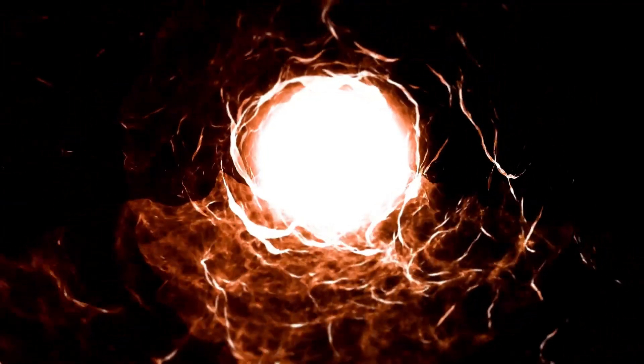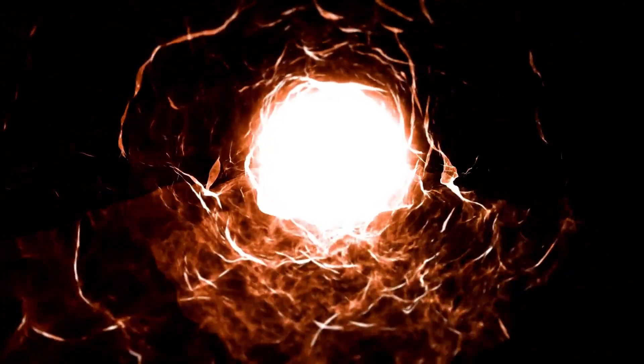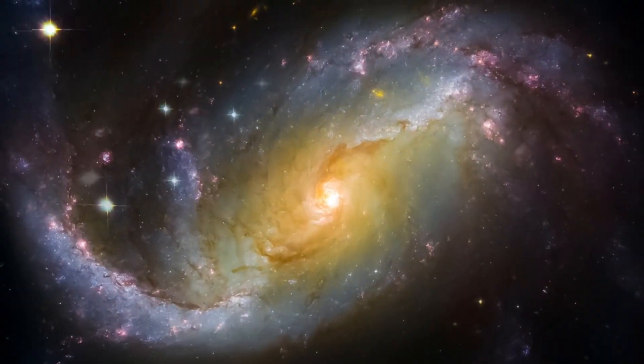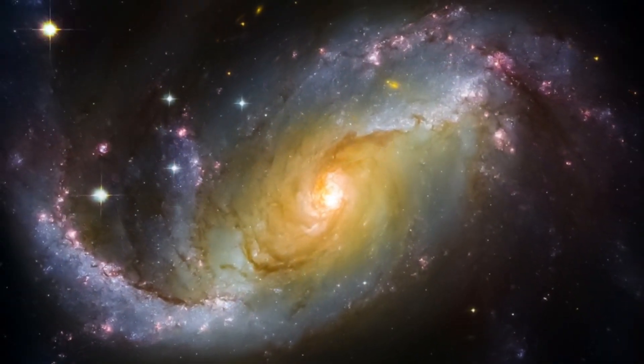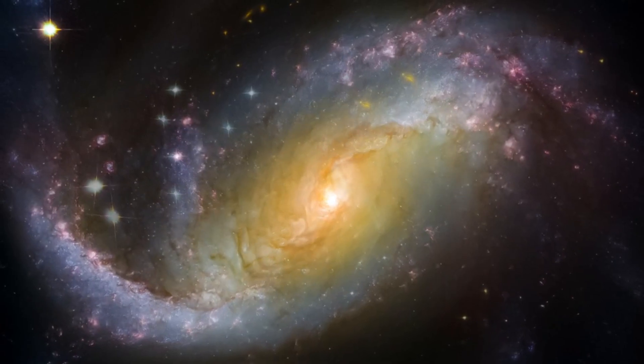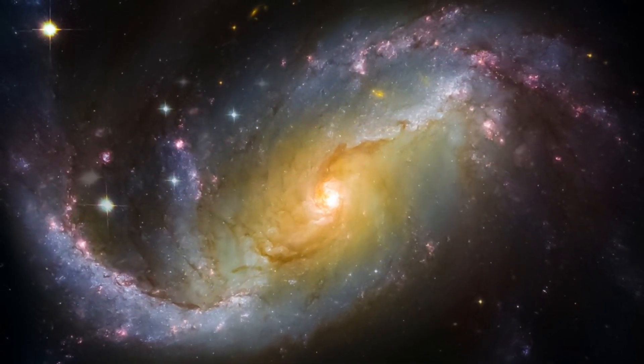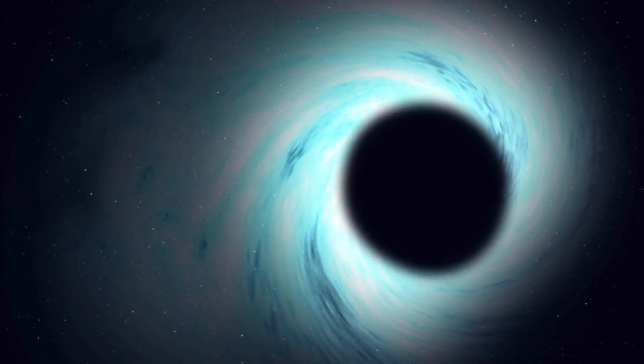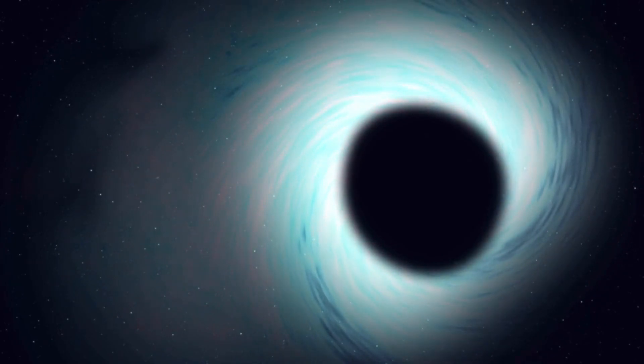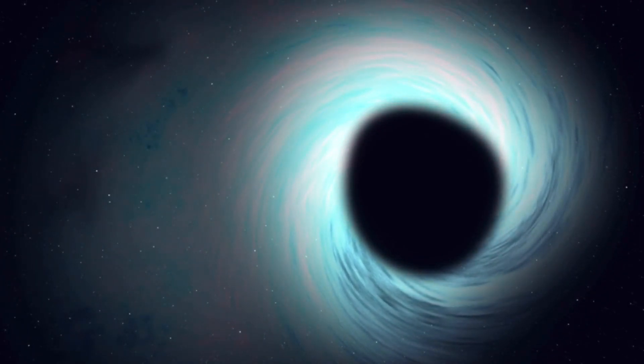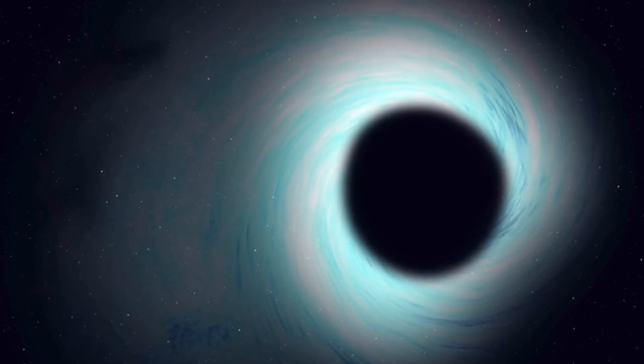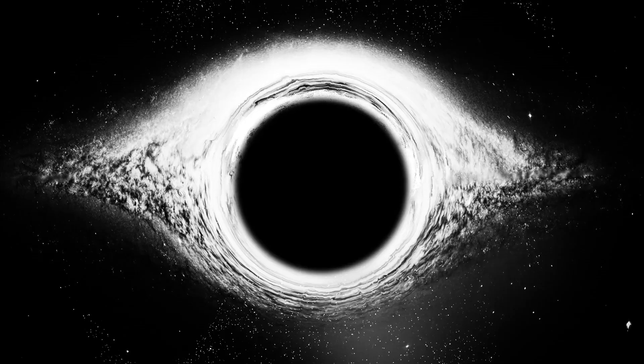On the other hand, Kerr black holes are both charged and rotating, introducing unique phenomena such as frame dragging, where the rotating black hole twists the surrounding spacetime. These black holes have both an outer horizon and an inner region called the Cauchy horizon, a boundary separating the exterior from the singularity within. The presence of an electric charge introduces a repulsive electrostatic force in addition to gravity, affecting the behavior of nearby particles and matter.